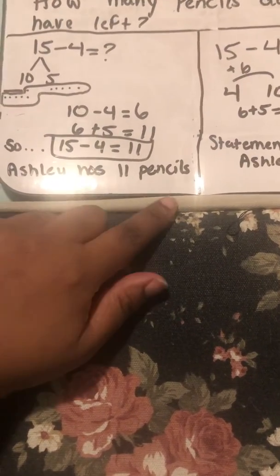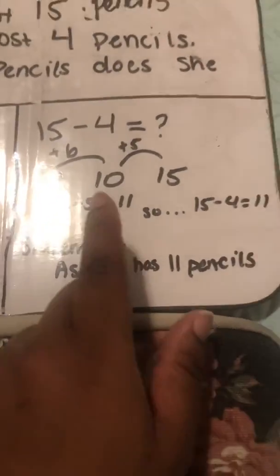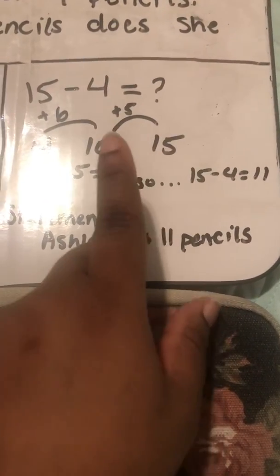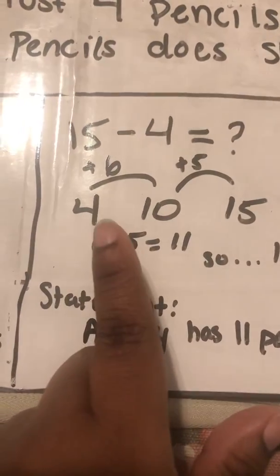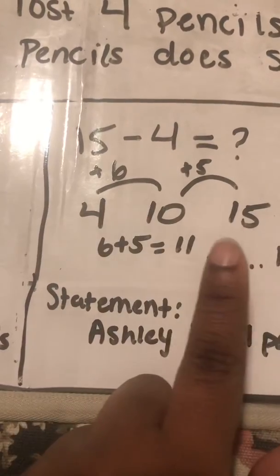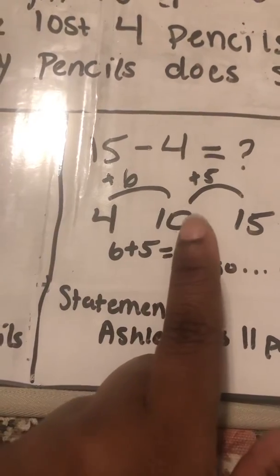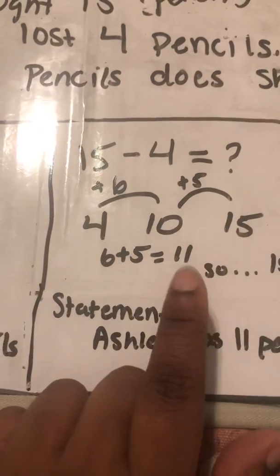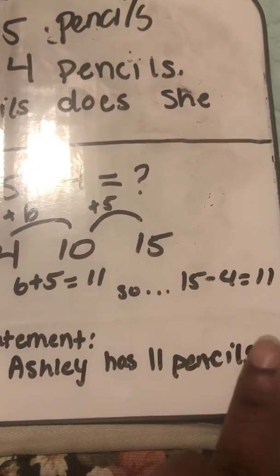That's the take from 10 method. If you used the counting on method: you have 15 take away 4, but you don't know the answer yet. You start with 4 and think, how much more does 4 need to get to 10? The answer is 6. Then how much does 10 need to get to 15? That's 5. So 6 plus 5 equals 11, which means 15 take away 4 equals 11.